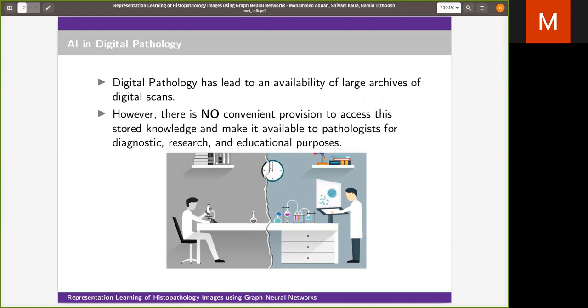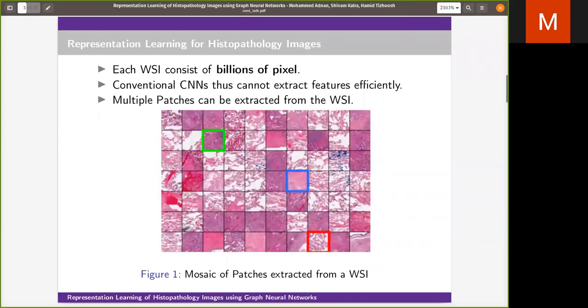Each WSI is a gigabyte in size and may contain up to billions of pixels. Although CNNs have achieved state of the art accuracy in various computer vision tasks, they fail to extract good features from WSI.